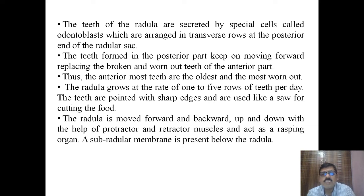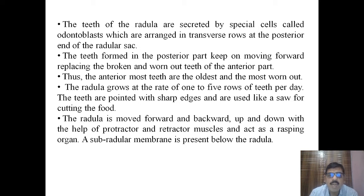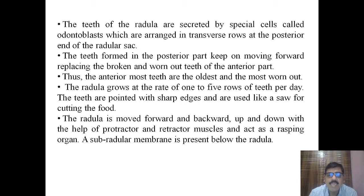The teeth of the radula are secreted by special cells called odontoblast cells, which are arranged in transverse rows at the posterior end of the radular side. The teeth keep moving forward, replacing the broken and worn-out teeth of the anterior part. Thus the anteriormost teeth are the oldest and most worn out. The radula grows at a rate of 1 to 5 rows of teeth daily. The teeth are pointed with sharp edges and are used like a saw for cutting food material. The radula is moved forward and backward and up and down with the help of protractor and retractor muscles, acting as a rasping organ. A sub-radular membrane is present below the radula.